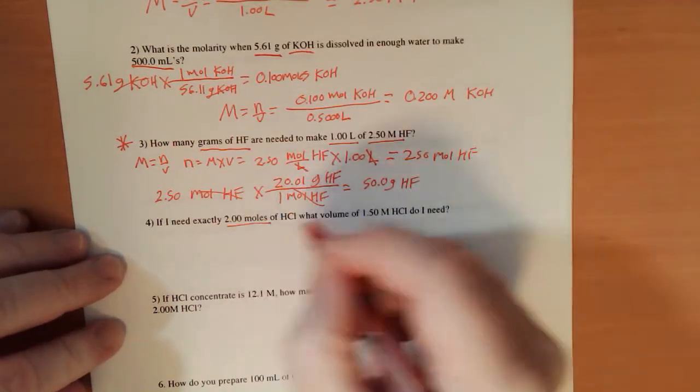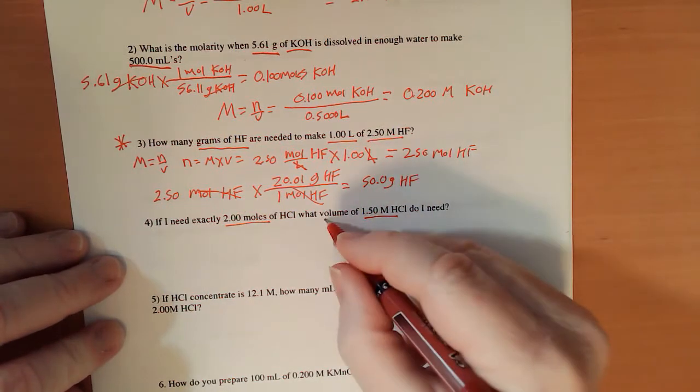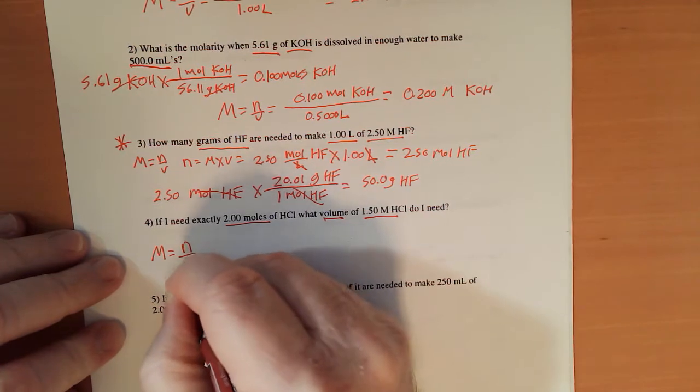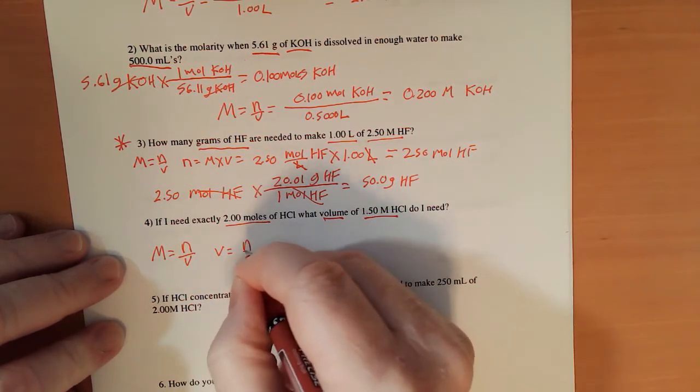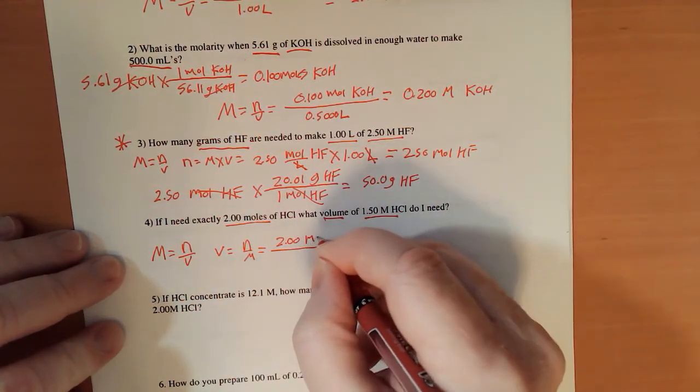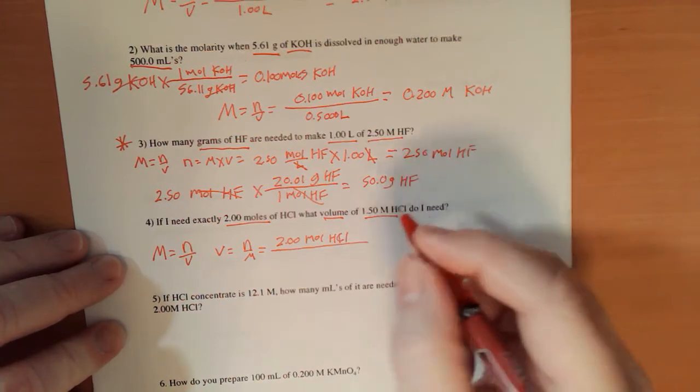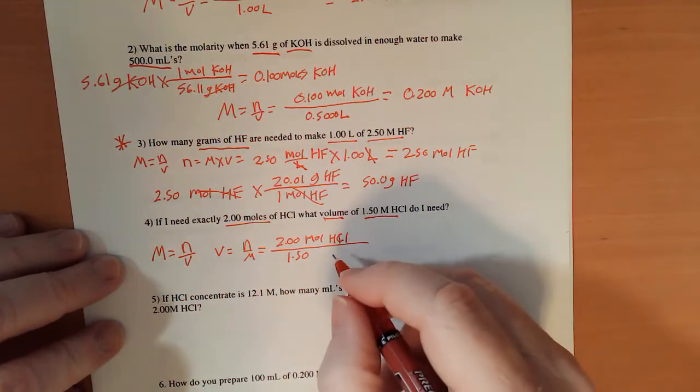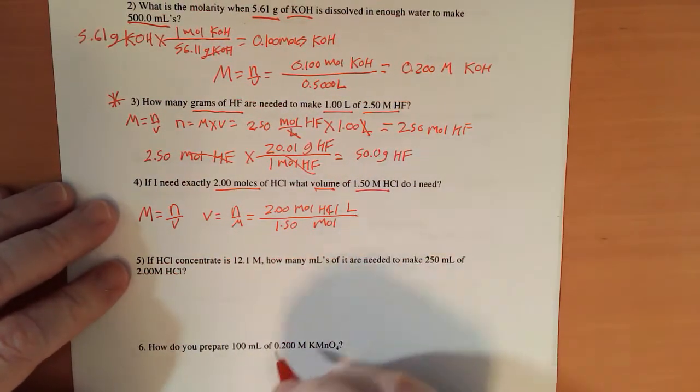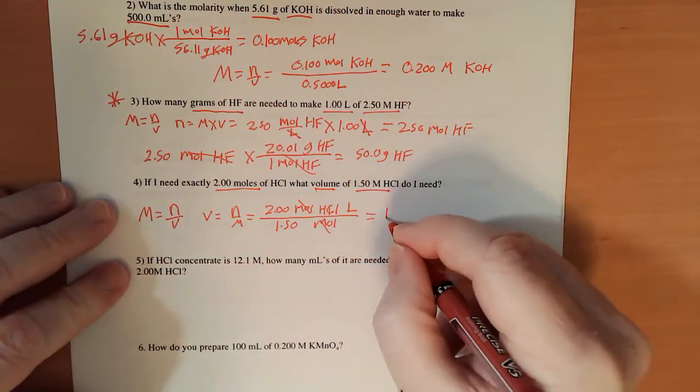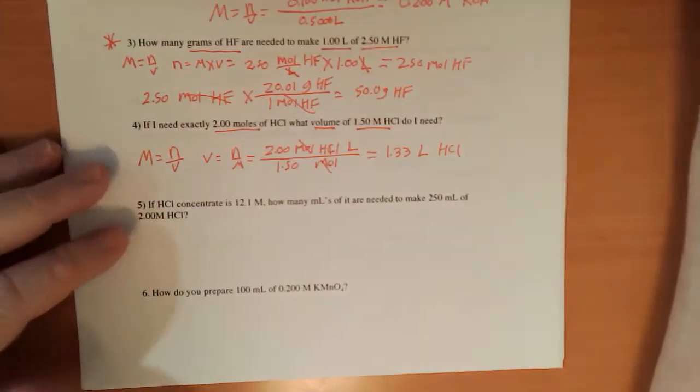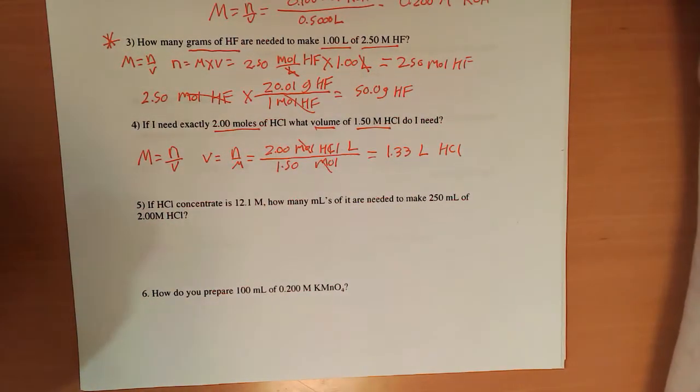So if I have moles and molarity and I want to know volume, molarity equals moles over volume. Volume equals moles over molarity, which equals 2.00 moles of HCl divided by 1.50. So here's the important little trick here, guys. Write it as mole per liter, and you'll see the moles cancel, and this is 1.33 liters of HCl.